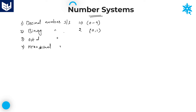Coming to the octal number system — octal means 8 — we will be having a total of 8 digits. Those are from 0 to 7. We should not use any digit beyond 7.